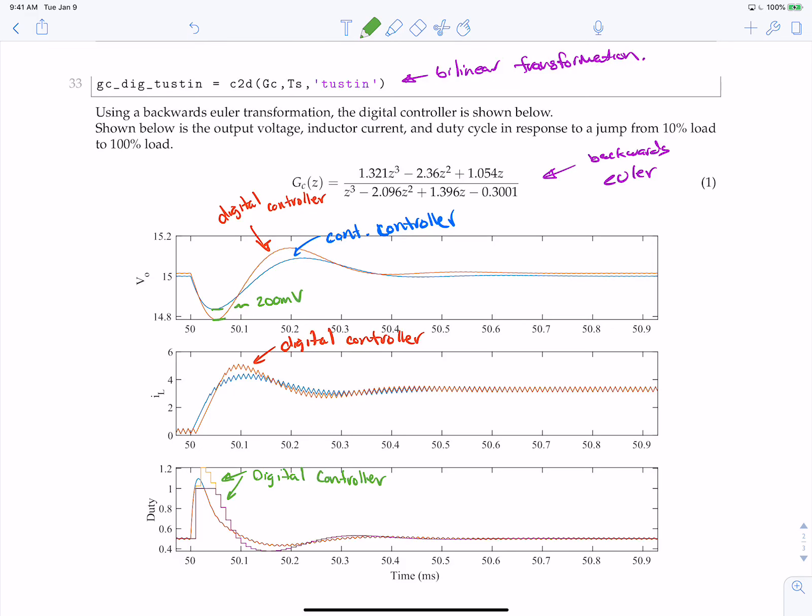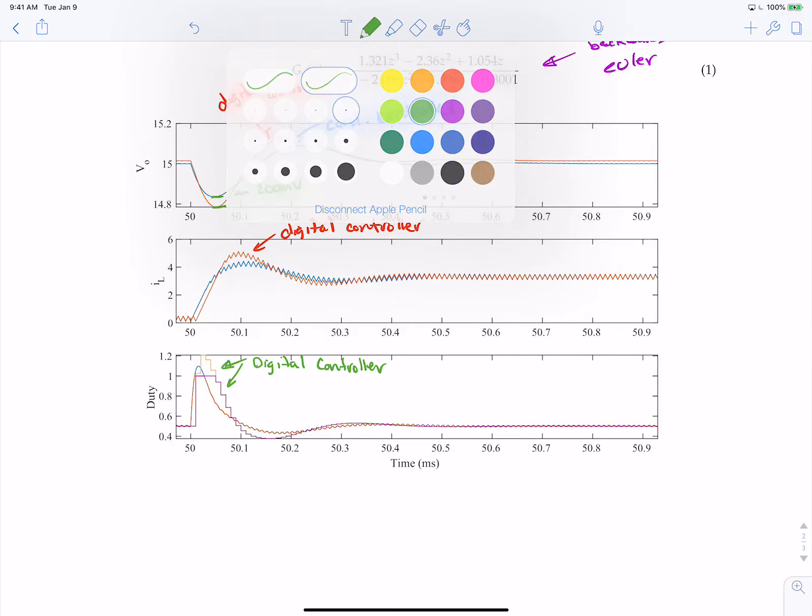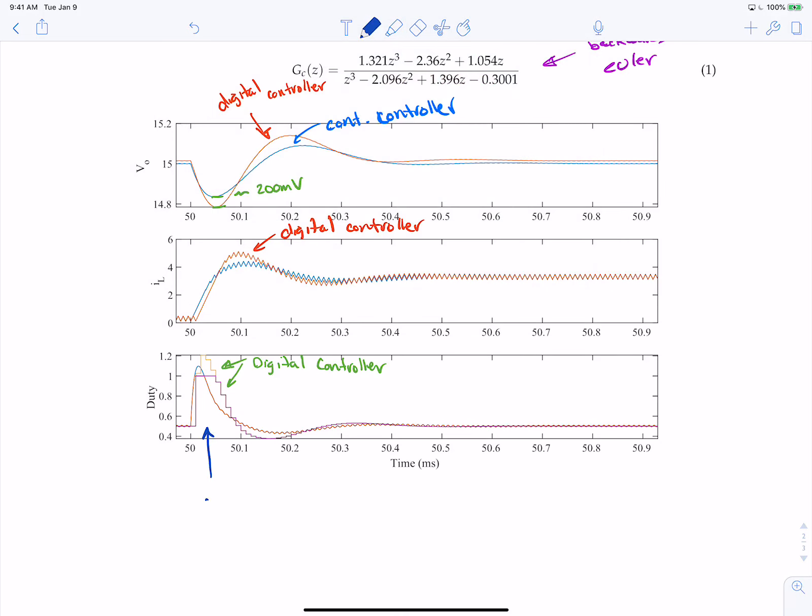So one thing we'll talk about here is you could, we didn't implement it here, but you could do anti-windup in the digital domain. So what is anti-windup? Essentially, once the controller outputs a 1 or whatever the equivalent number is for duty cycle of 1, you stop actuating when your controller error is positive because you've already essentially saturated.